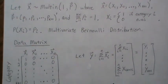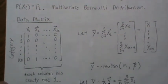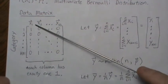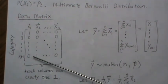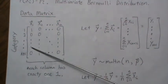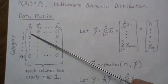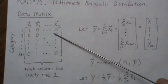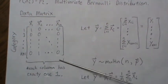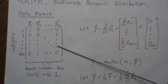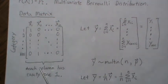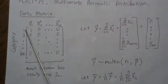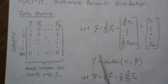Let's look at the data matrix. If we take a sample of size n, each column represents a vector that will be all 0's except for 1 component — all the way through, all 0's except for 1 component. Each column has exactly one 1, and these can be thought of as categories 1 through K+1.